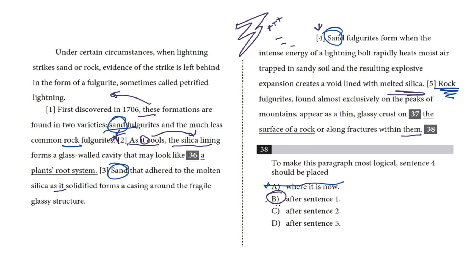Choice B, we'll skip because that's the right answer. We've already talked about that. Choice C, if we put sentence four after sentence two, it still describes cooling silica out of order before the heating is introduced, and it also interrupts this relationship between glass-walled cavity and the fragile glassy structure in sentences two and three. So we can cross that off too.